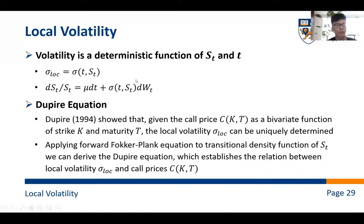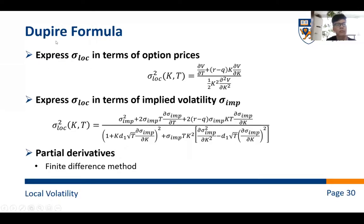And next, we're going to talk about the local volatility. So in the local volatility model, volatility is a deterministic function of S and T. And Dupire showed that given the call price as a bivariate function of strike and maturity, the local volatility can be uniquely determined. And this kind of relation is called the Dupire formula. And we can express the local volatility in terms of option prices using this formula. And further, we can express the local volatility in terms of implied volatility using the following formula. And we can see that in this formula, there are three different partial derivatives.